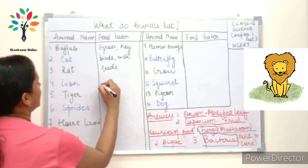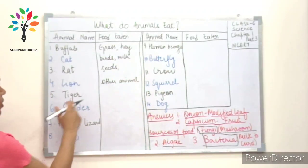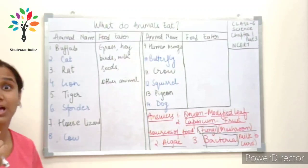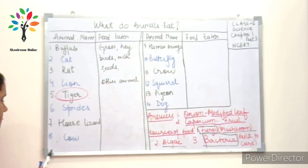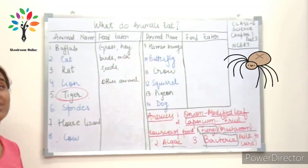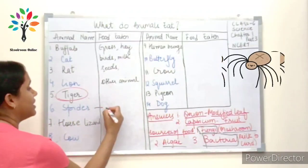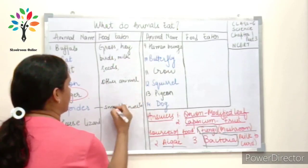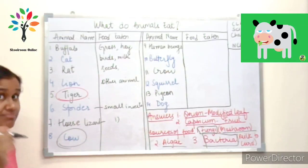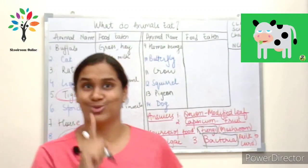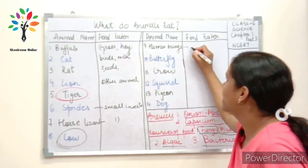Lion eats other animals — big animals or small animals. What does the tiger eat? I'm not giving out that answer — leave it in the comment section. Spider eats small insects. Lizard has a similar diet. Cow — children, you tell me what the cow eats. As for human beings, we eat both plants and animals.